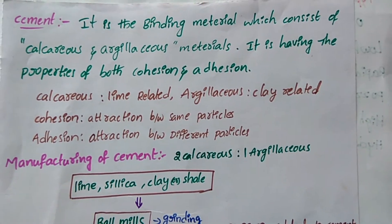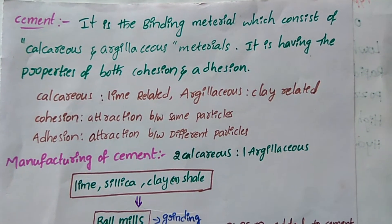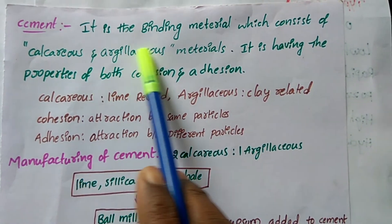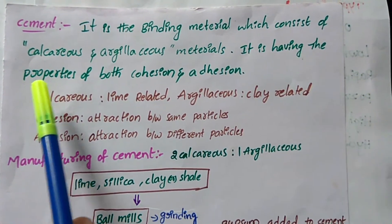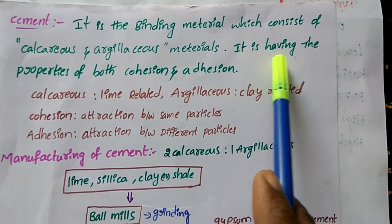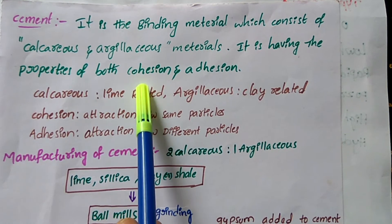Hello everyone, welcome to Civil Tech Constructions. In this video, we will learn about cement. What is cement? It is a binding material which consists of calcareous and argillaceous materials. It has the properties of cohesion and